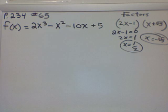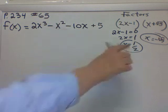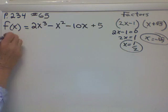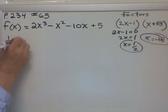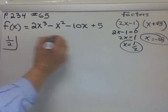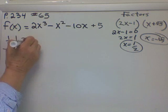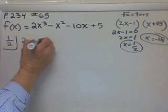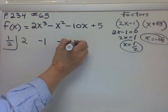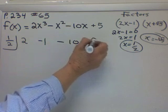And now I'm just going to use synthetic, and I'm going to start with the 1/2 because that's a little easier to use. So I'm going to start with 1/2 in my little box here. I'm going to list these numbers across the top, just the coefficients: 2, minus 1, minus 10, and 5.